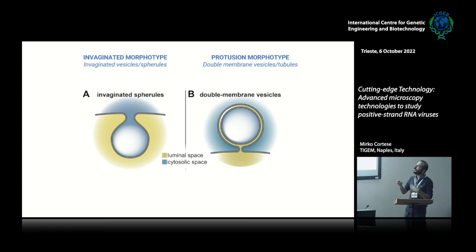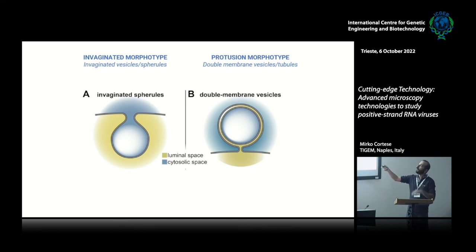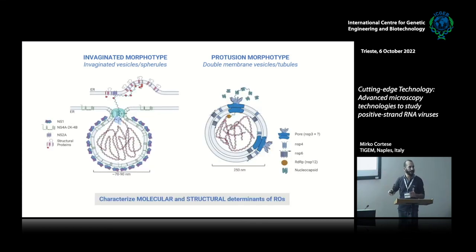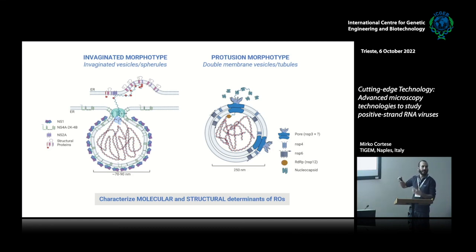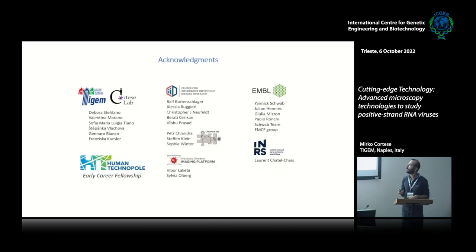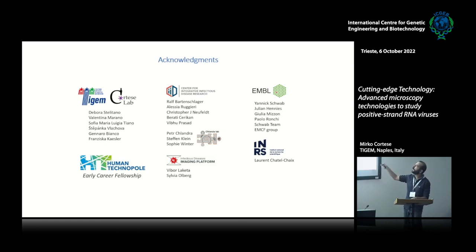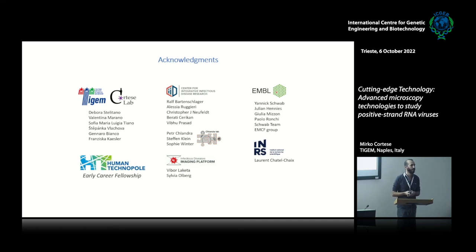Using microscopy and combining different imaging modalities, we have progressed from knowing that replication organelles looked like invaginations and protrusions, to now knowing their three-dimensional structure and molecular composition — which molecules decorate these structures. This is important because understanding which molecules are important for viral replication gives us tools to create antivirals that can stop viral replication and infection. I want to thank all the people that worked on this project. This work was mainly done during my post-doc in the group of Wolff-Bartenschlager at Heidelberg, in collaboration with many groups including EMBL facilities, and I'm continuing these stories in my own group at the TGEM Institute in collaboration with the Human Technopole.